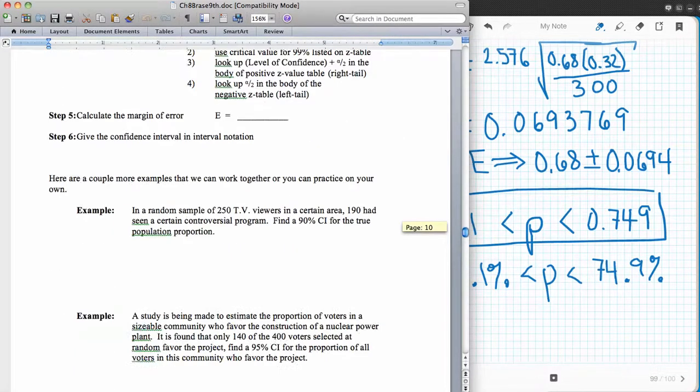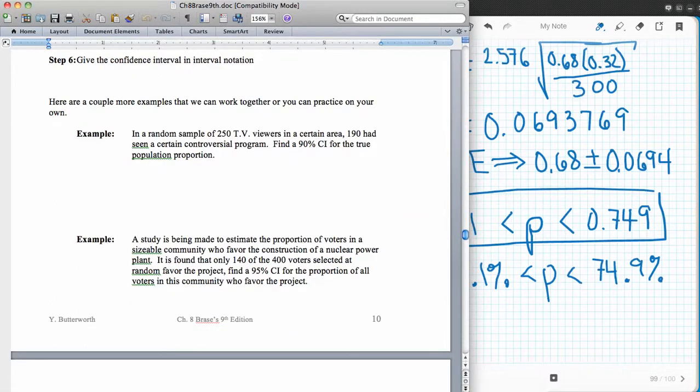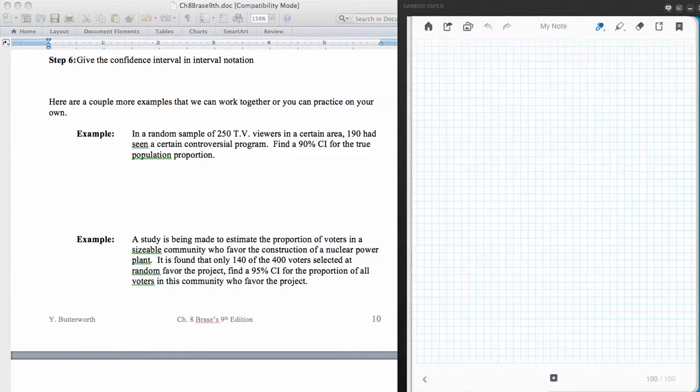So now let's take another look at another example, a couple of examples so you could practice these. So let's do the next one together, and I'll go ahead and do this fairly slowly so that you can try to do it on your own. So in a random sample of 250 TV viewers in a certain area, 190 had seen a certain controversial program. Find a 90% confidence interval for the true population proportion. So the first thing I should find would be, if you said p-hat, that's correct. So the first thing I want to do is I want to find out what my p-hat is. Well, that would be the number of successes. That would be 190, out of the total number surveyed, that would be 250.